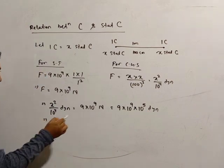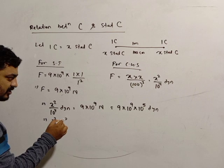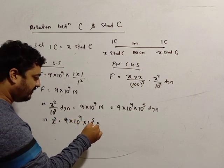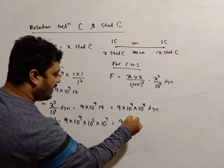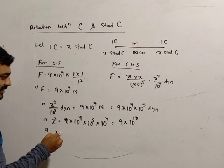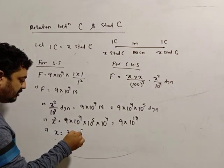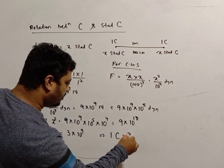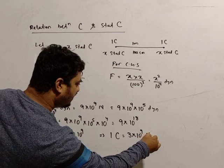Now, x² = 10⁴ × 9 × 10⁹ × 10⁵ × 10⁴, which equals 9 × 10¹⁸. So x = 3 × 10⁹. Therefore we can say 1 Coulomb equals 3 × 10⁹ stat-Coulomb.